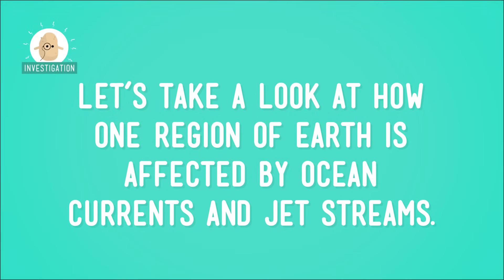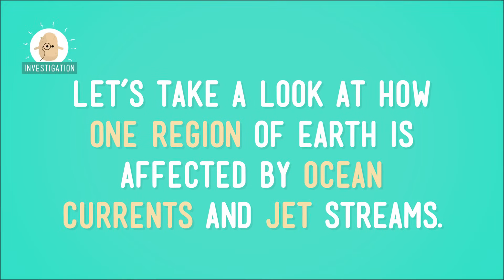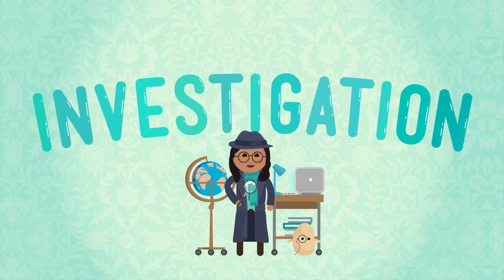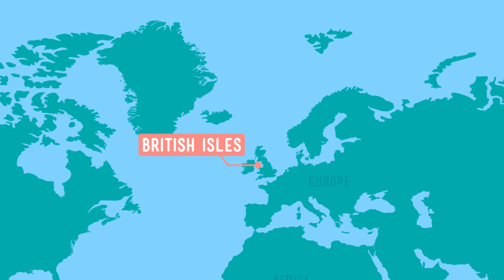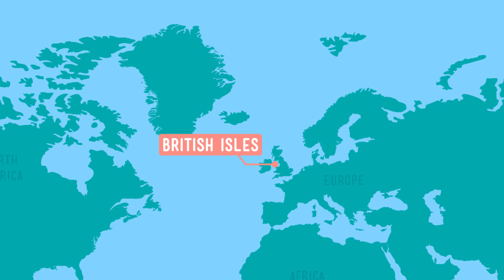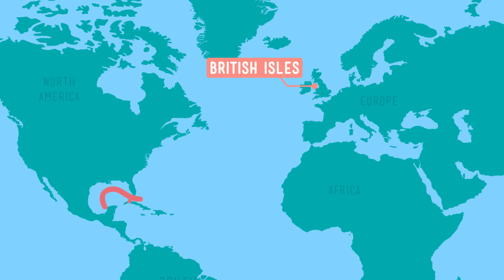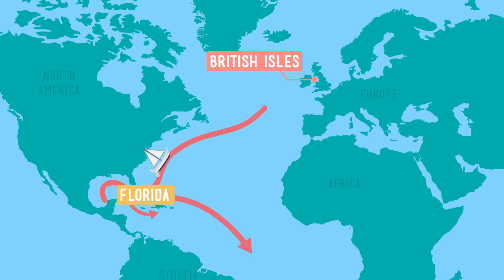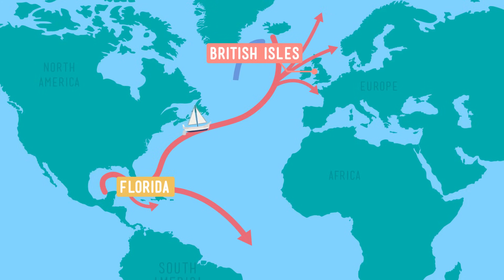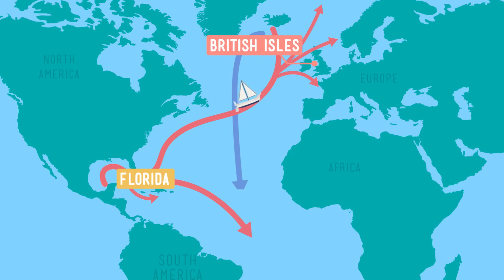But to see how they work, let's take a look at how one region of Earth is affected by ocean currents and jet streams. Welcome to the British Isles. Take a look at the British Isles on the globe. This group of islands is pretty far north, and so we might expect it to have a pretty cold climate. But there's something else at work here — namely, the ocean current. One current in particular helps keep the British Isles warm: the Gulf Stream. This massive current pulls warm water from the equator up past Florida, then all the way up to the British Isles. Meanwhile, cold water cycles down past the northwestern coast of Africa and back to the equator. This flow of warm water helps keep winters in the British Isles milder compared to other places that are so far north.